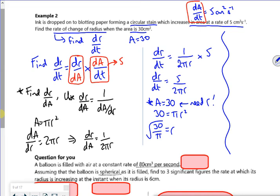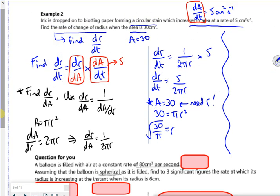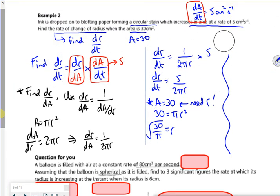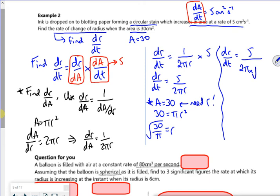So my dr by dt, let's see if I can fit it inside. So I'm going to put this line up. So I'm going to put this here. So dr by dt is 5 over 2π times by the square root of 30 over π. There we go.